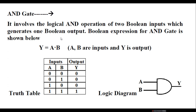The dot operator works as the AND operator. Here A and B are the inputs and Y is the output. The truth table for the AND gate can be shown like this — it has inputs A and B and it has output Y.